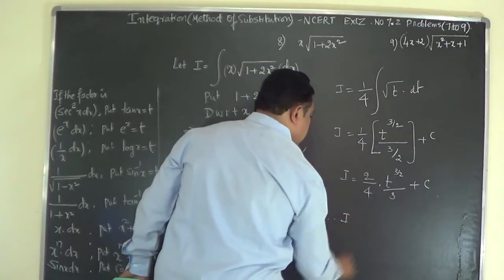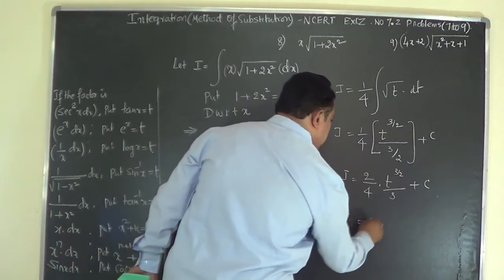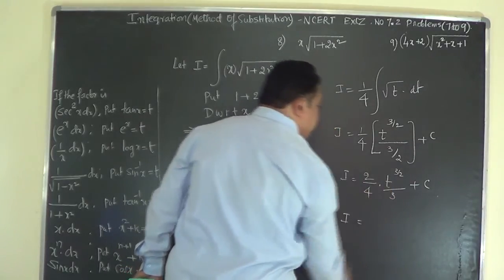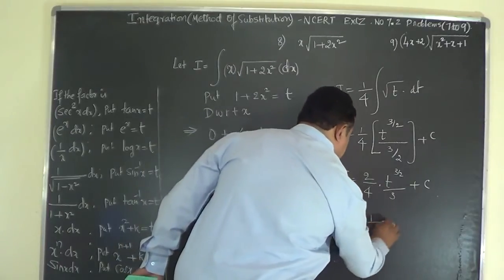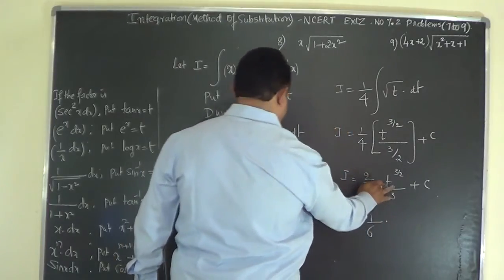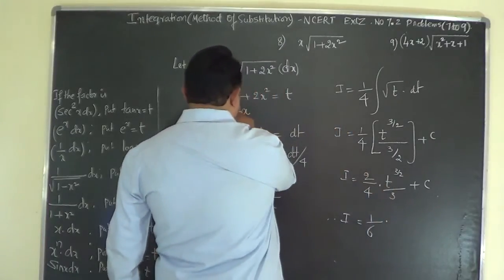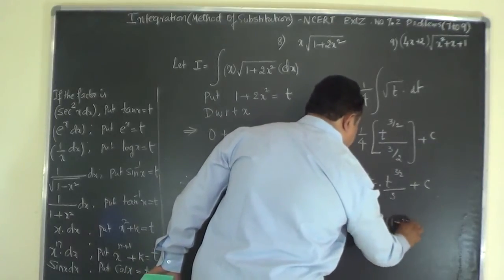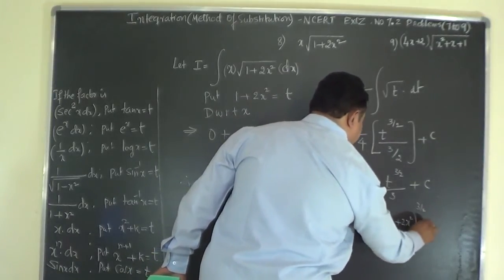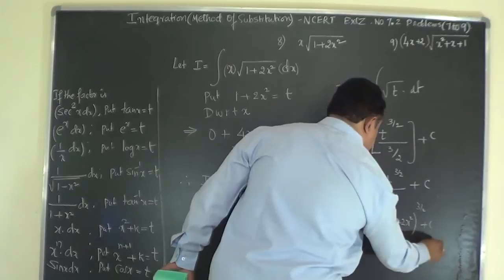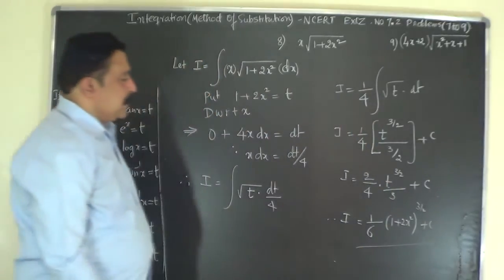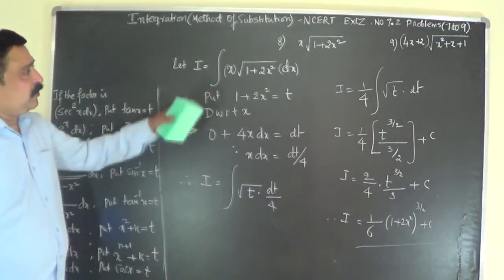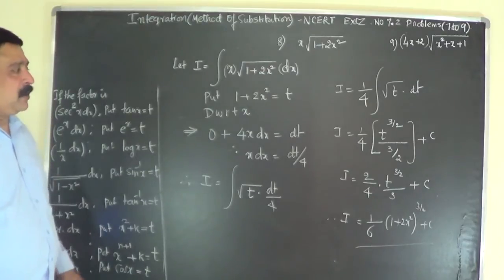Simplifying: 2 goes to the numerator giving 2/4 = 1/6 times t^(3/2). Back-substituting t = 1+2x², the final answer is I equals (1/6)·(1+2x²)^(3/2) plus C. That is the answer for problem number 8.